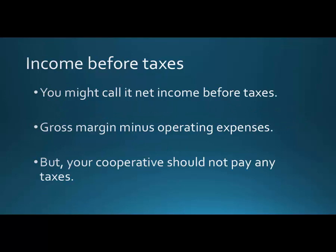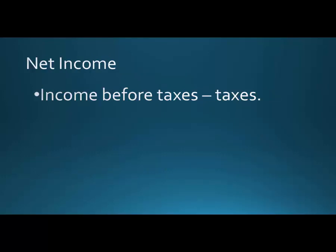The next category is income before taxes — sometimes called net income before taxes. That's simply our gross margin minus the operating expenses we just calculated. Now since we're dealing with a cooperative, you're not going to pay any taxes, because cooperatives don't have to worry about that double tax — so that's some good news. Then we take the income before taxes, back the taxes out, and we're left with the net income.